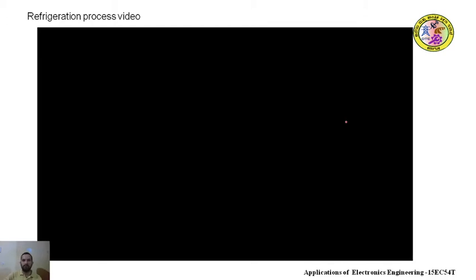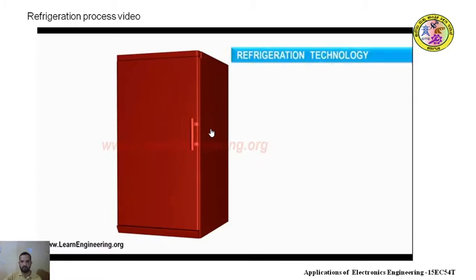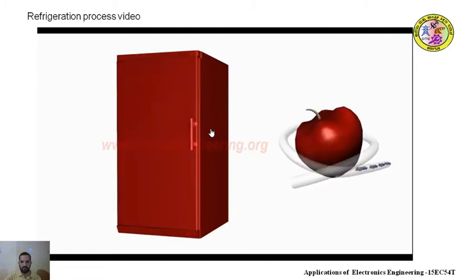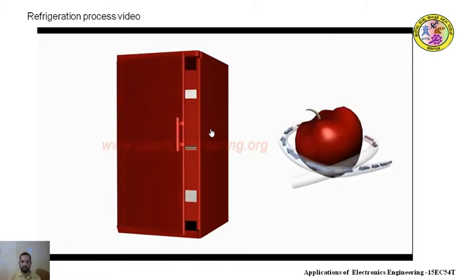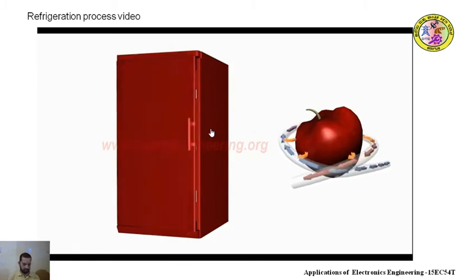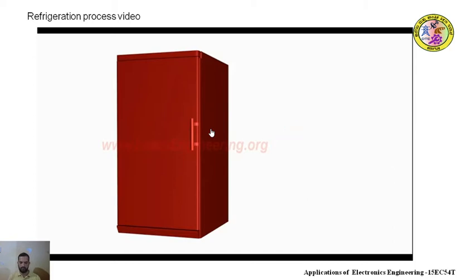Dear students, for a better understanding of the refrigeration process, we will see one video. The basic principle of refrigeration is simple: just pass a colder liquid continuously around the object which is to be cooled. This will take heat out from the object. The whole refrigeration technology is about how to produce cold liquid continuously. We will see how this is achieved in this video.